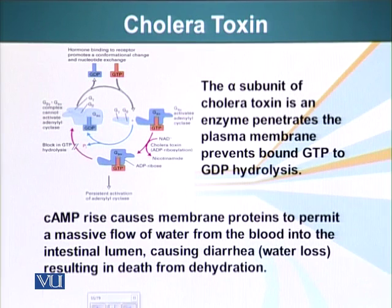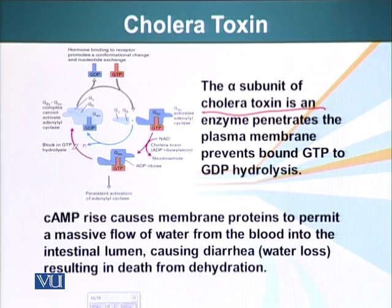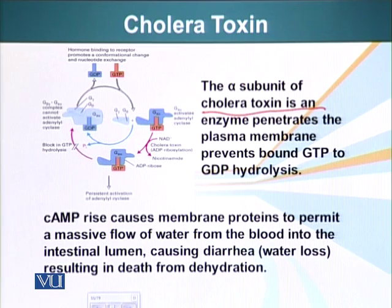Another important point is that G proteins are manipulated by some pathogens. For example, the alpha subunit of cholera toxin is an enzyme that can penetrate the plasma membrane and prevent GTP bound to the G protein from undergoing hydrolysis — preventing G proteins from hydrolyzing their GTP into GDP.